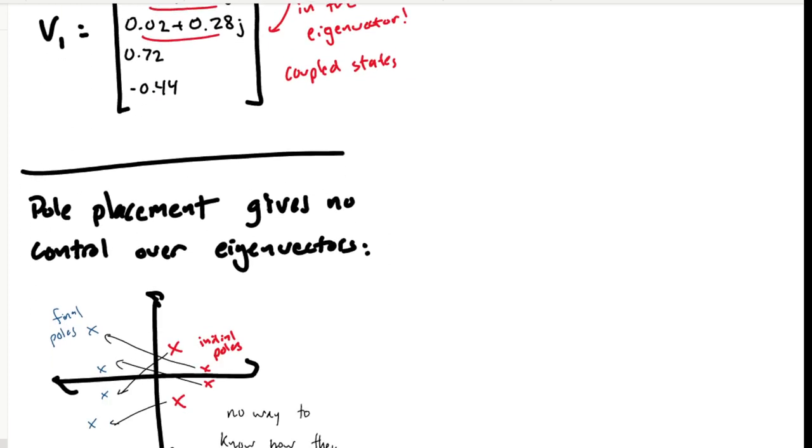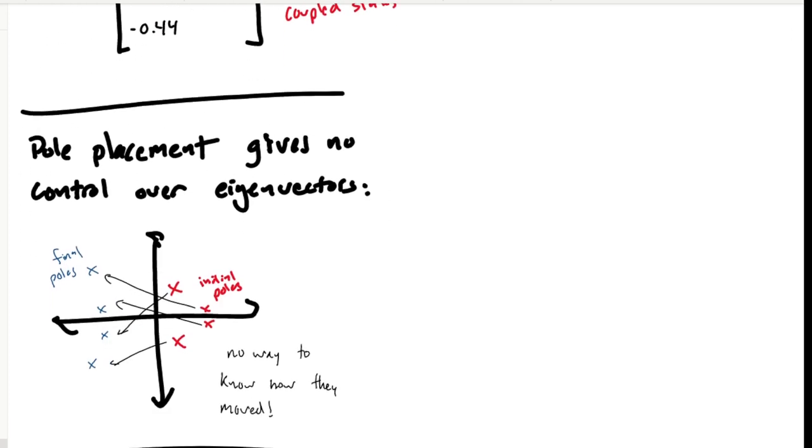When we use pole placement, we have no control over the eigenvectors of the system. While it's common to think of assigning specific poles to specific states, for example, I might want one of the masses to decay more quickly than the other, and so I pick a very negative eigenvalue for one and a less negative eigenvalue for the other.